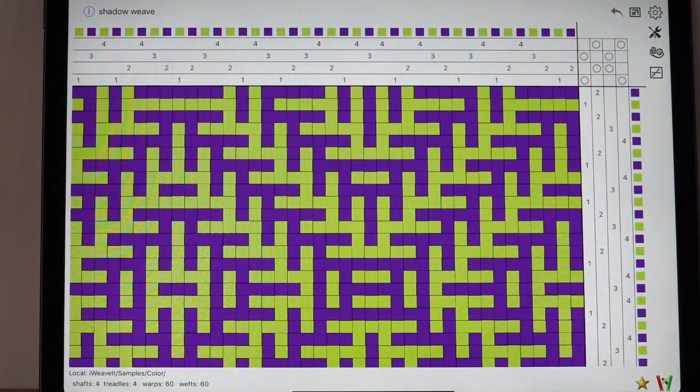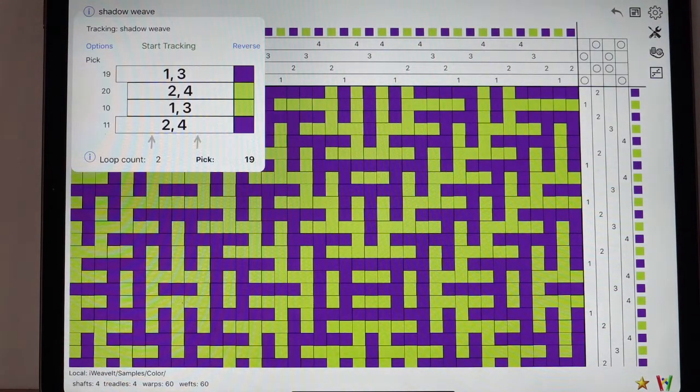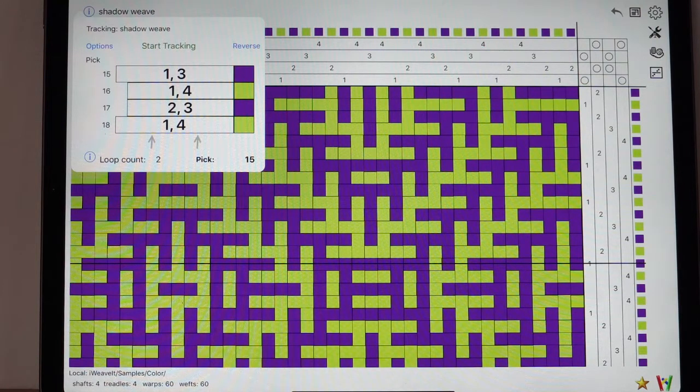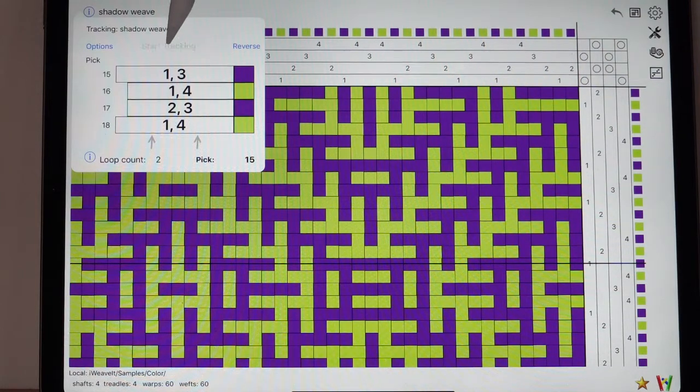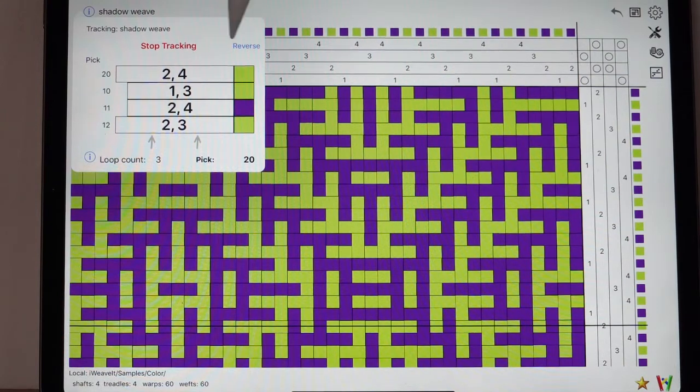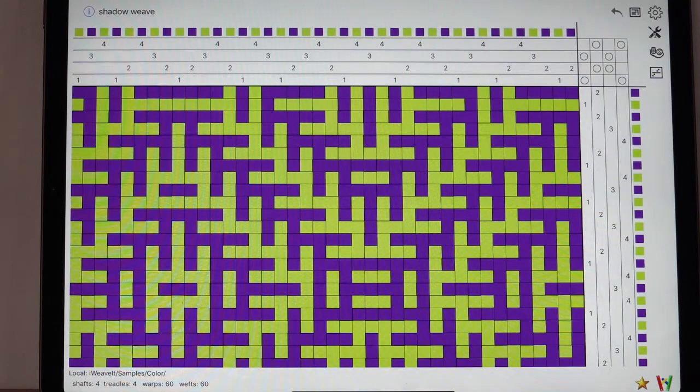When you're done, you stop tracking, dismiss the dialogue, come back later, and it shows you exactly where you were. It doesn't have, it doesn't do automatically reverse, but you can pick that if you want. But it will pick all the other options. So it still thinks it's doing a loop. So we'll go start tracking, and it's doing the loop again. Stop tracking. Okay, and you're done. So that's the treadle tracking add-on.